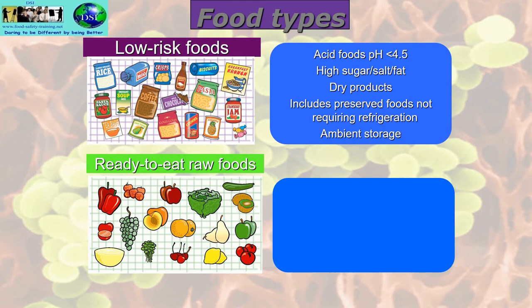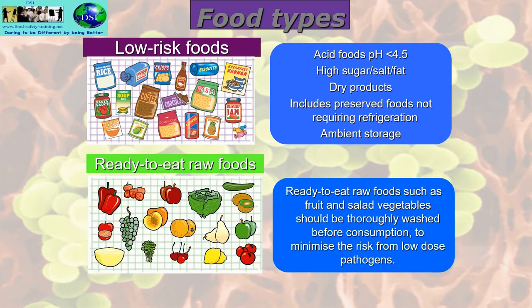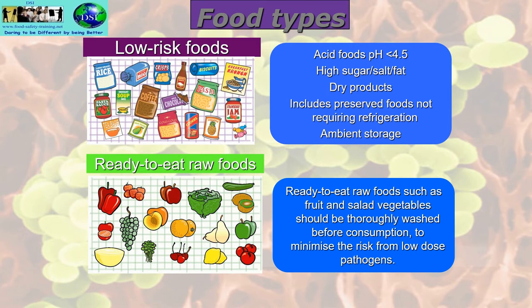Low-risk foods include preserved foods not requiring refrigeration, foods at ambient or room temperature, and ready-to-eat raw foods such as salads and fruit. Ready-to-eat raw foods should be thoroughly washed before consumption to minimize the risk from low-dose pathogens. Normally with food poisoning bacteria you need several hundred thousand to a million or more to make you ill — you can fit a million salmonella on a pinhead. But with ready-to-eat raw foods, you may only need one or two bacteria to cause a problem.